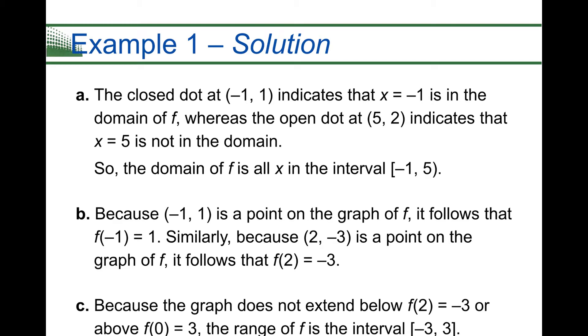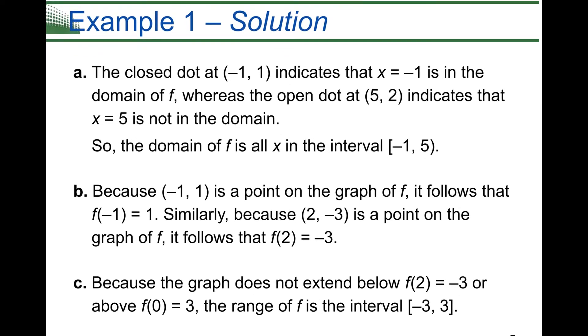So you can see the solutions here. The closed dot at negative 1, 1 indicates that x equals negative 1. So this is that domain question. They were talking about the domain. It's in the domain of f. Whereas the open dot at 5, 2 indicates not in the domain. So it can be written as the interval, or remember we talked about how it could be written as an inequality as well. Either of those would be good answers for your domain.